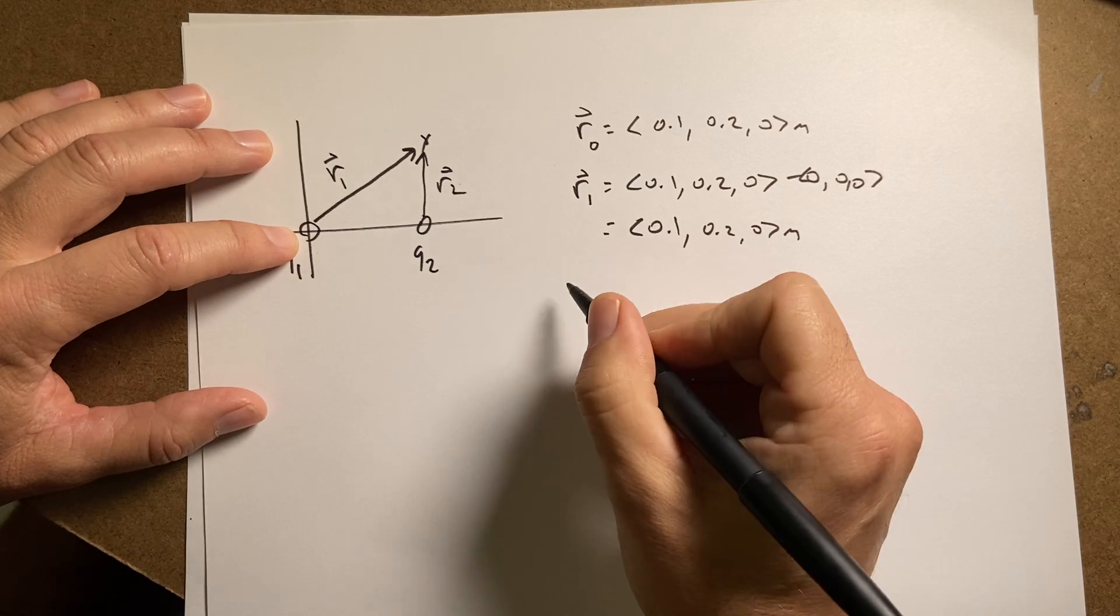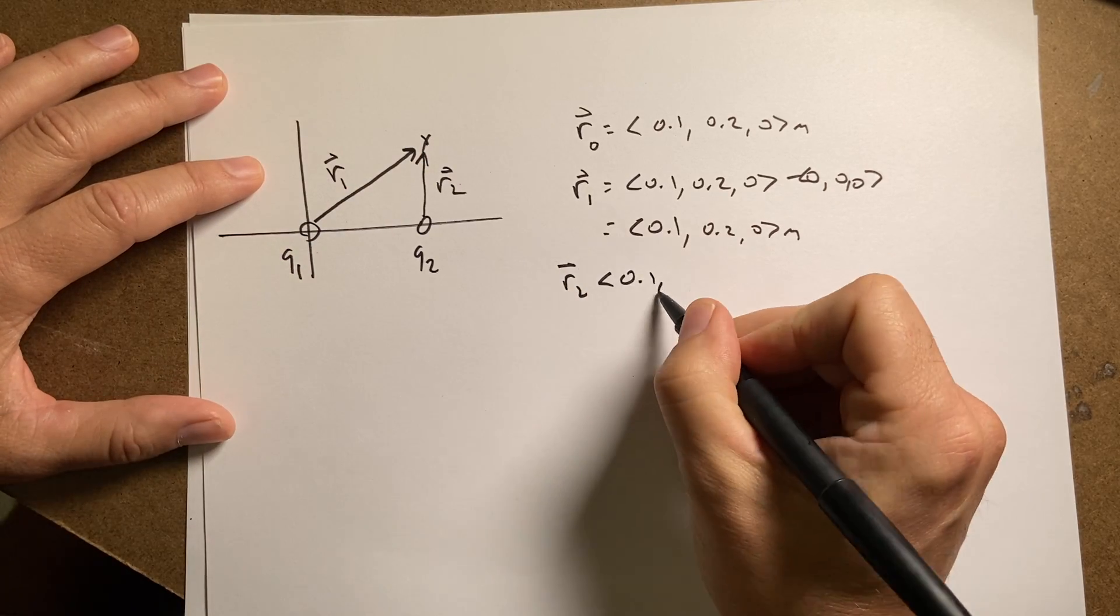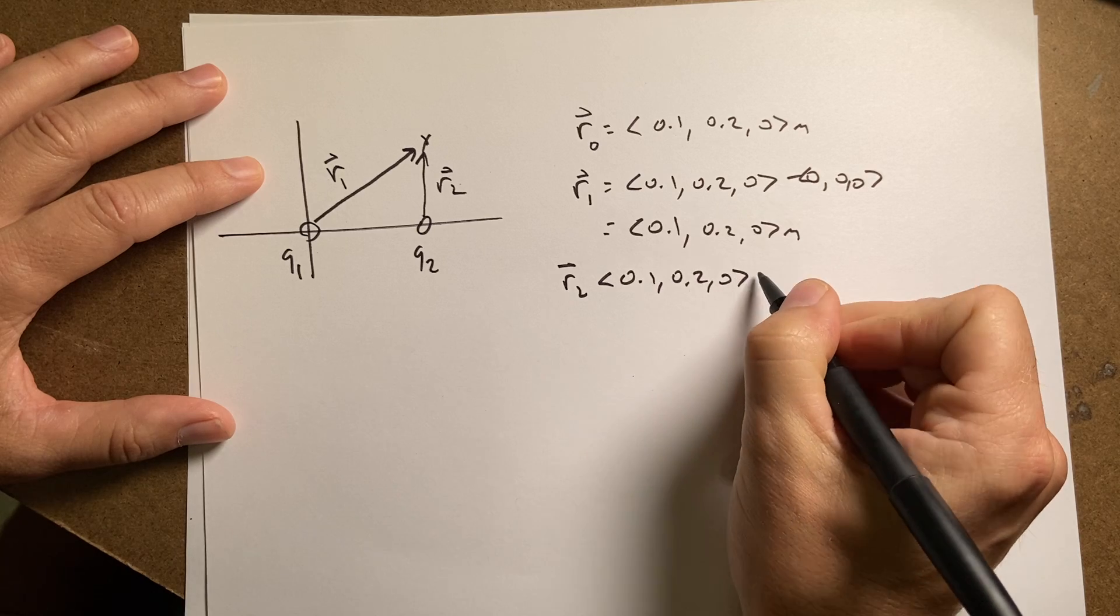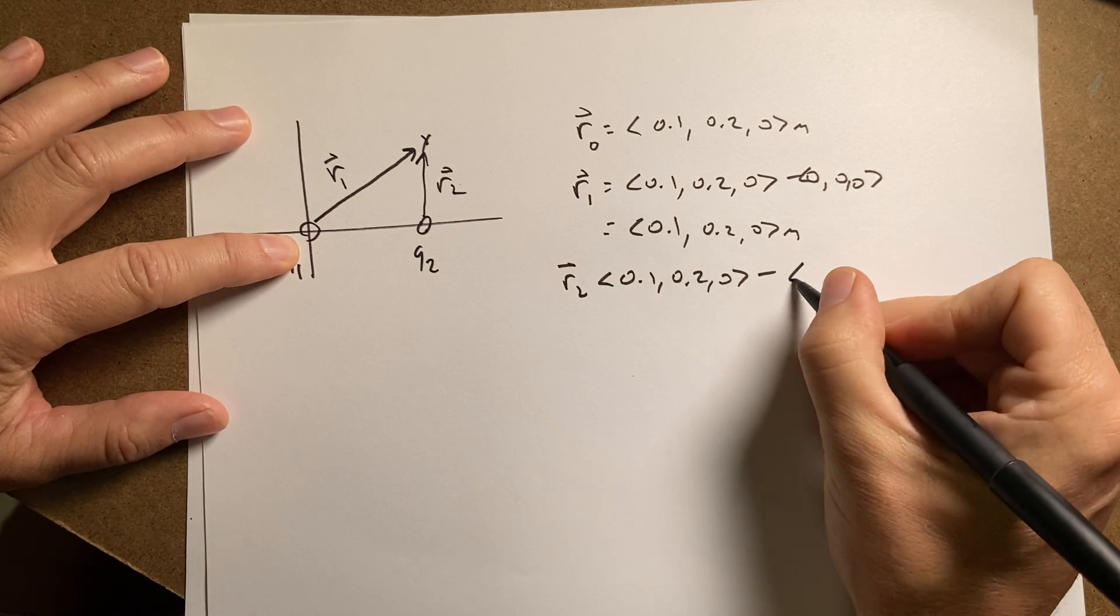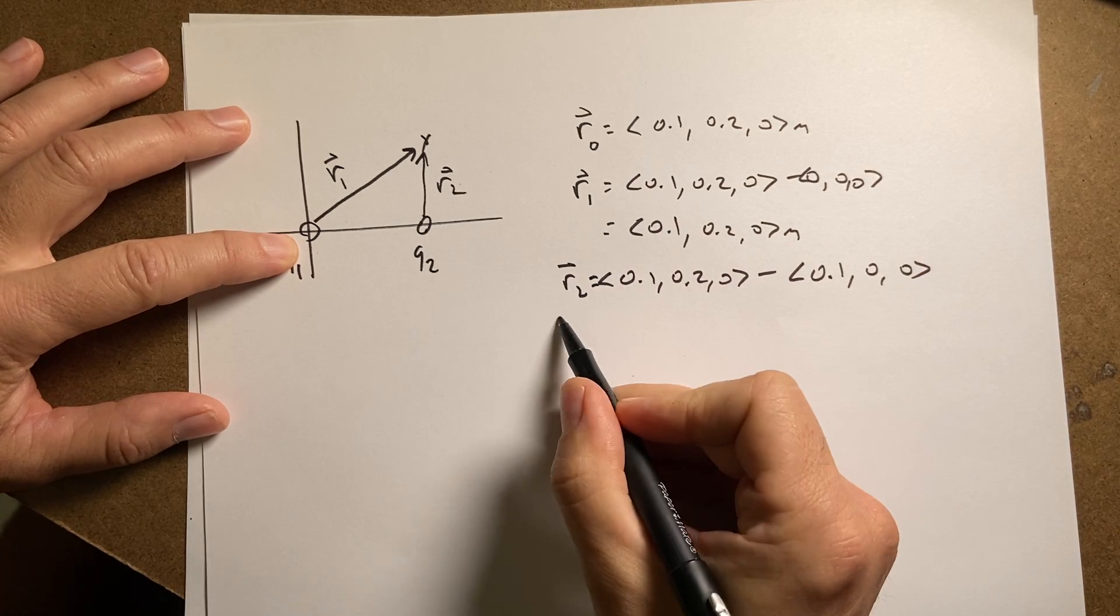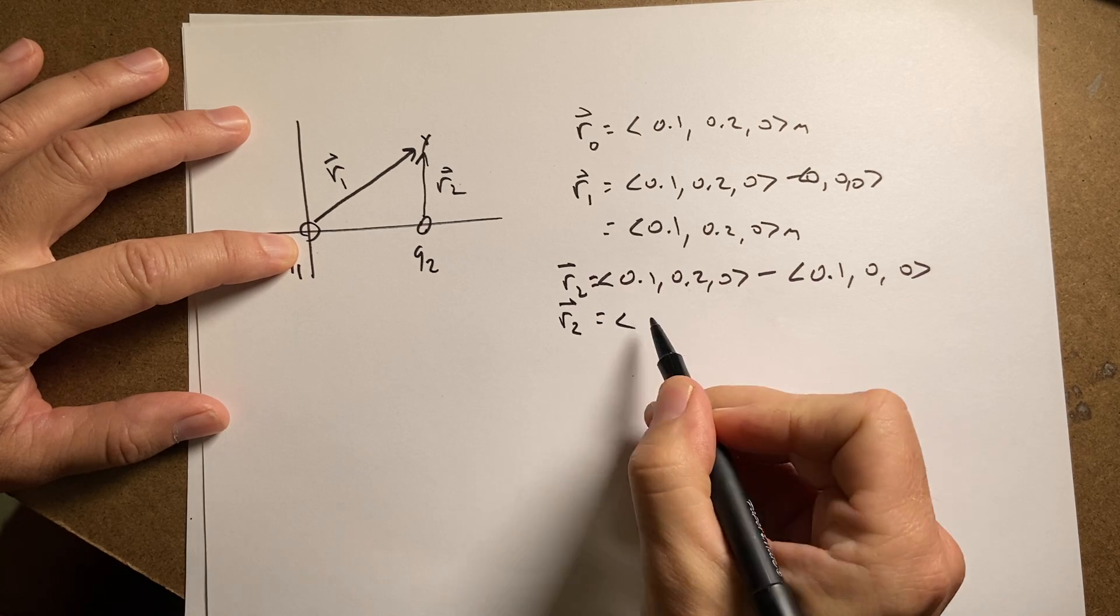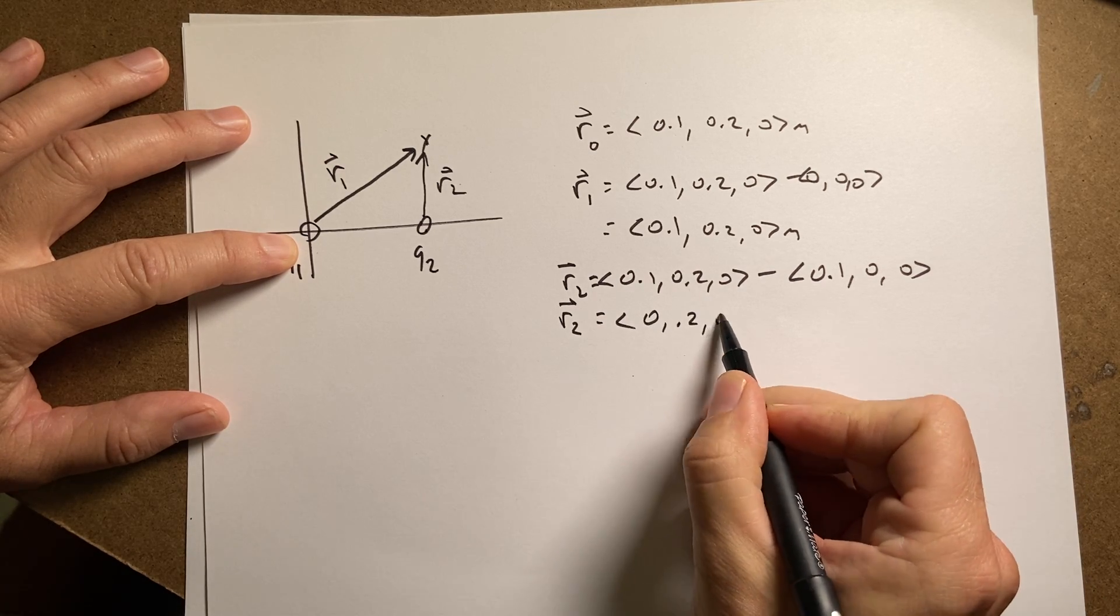Now what about this one? R2 is going to be the final location of 0.1, 0.2, 0, minus the location where it started from, which is right here, which is 0.1, 0, 0. So R2 is equal to 0.1 minus 0.1 is 0. So I get 0, 0.2, 0.